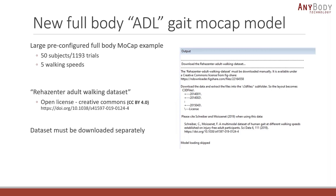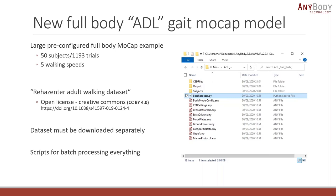If you run these models out of the box, you get an error in AnyBody saying that you need to download the dataset yourself. We don't distribute the data set — it takes up a lot of megabytes — but it's easy to download. There is a link provided. You download it, unzip it, and place all the C3D files in the subfolder of the model, and then it runs out of the box. We know that when there are so many trials it's not easy to run them all by hand, so we've also included a batch processing script.